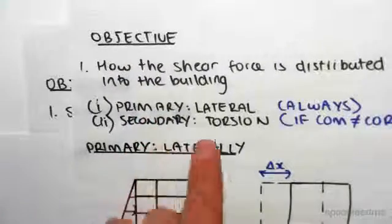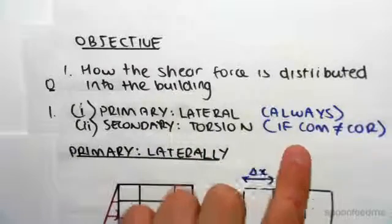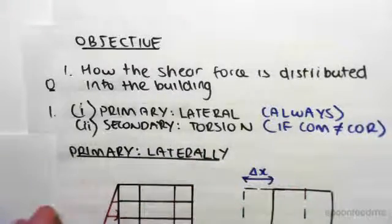Now, we said in the previous video that we're always going to have lateral loading, and the secondary action will be torsion depending on whether the center of mass is equal or not to the center of rigidity.